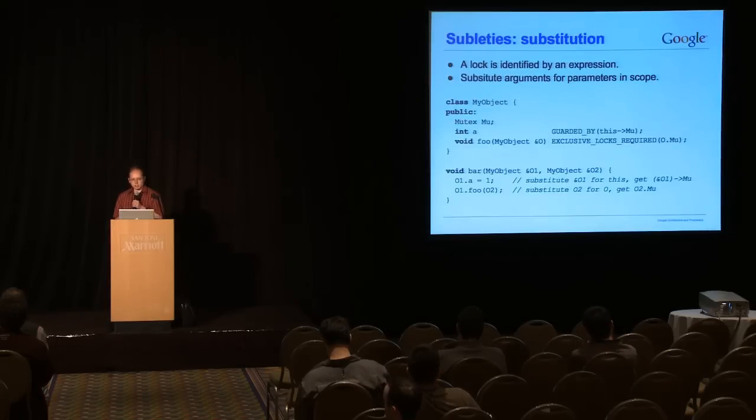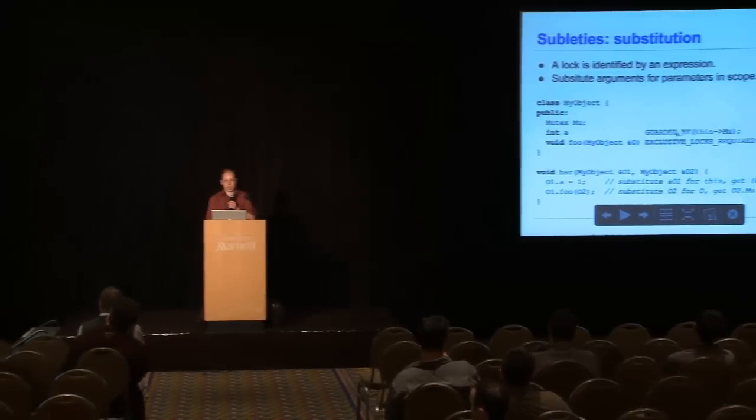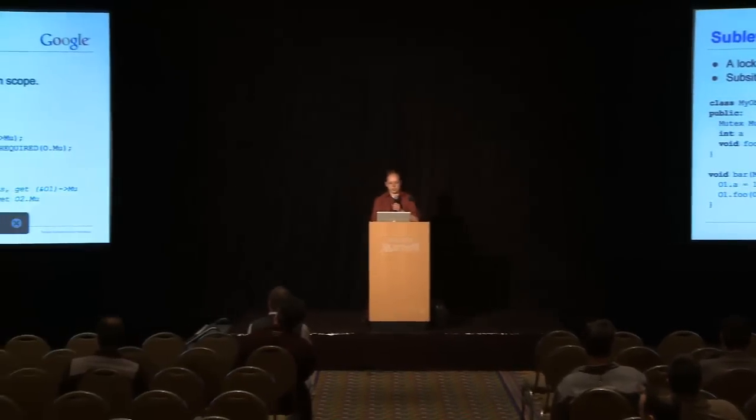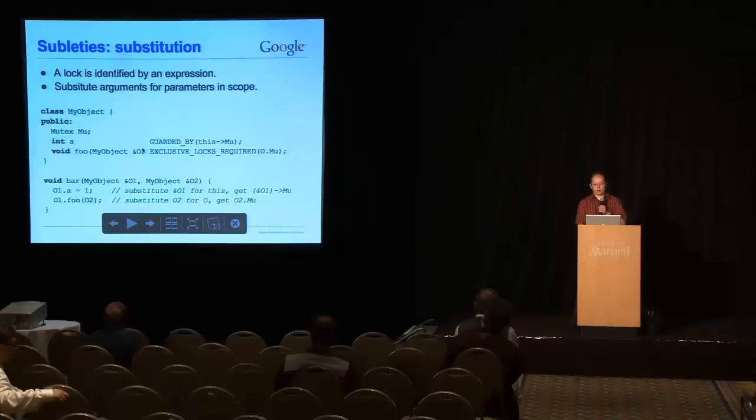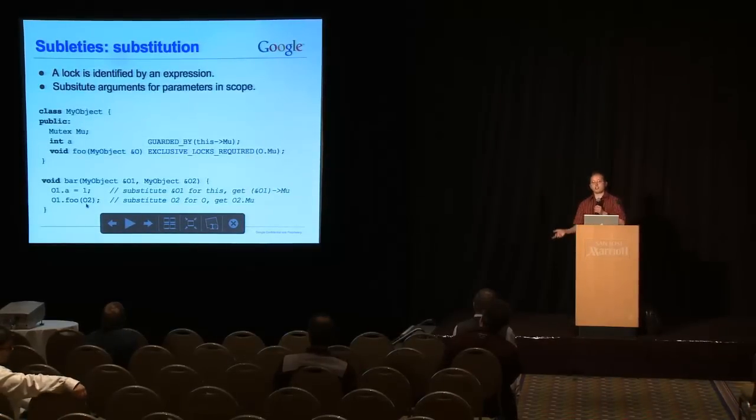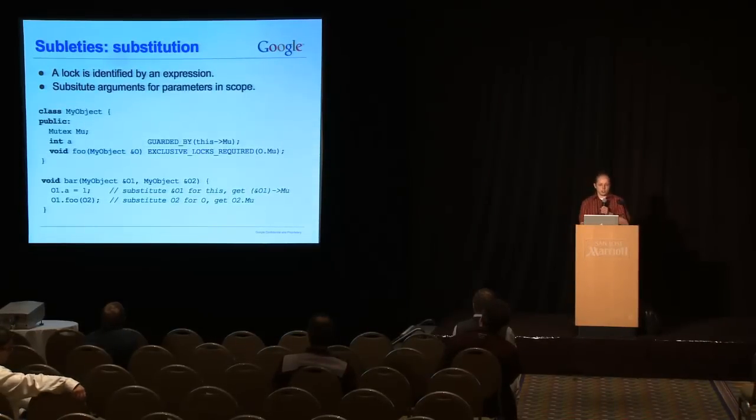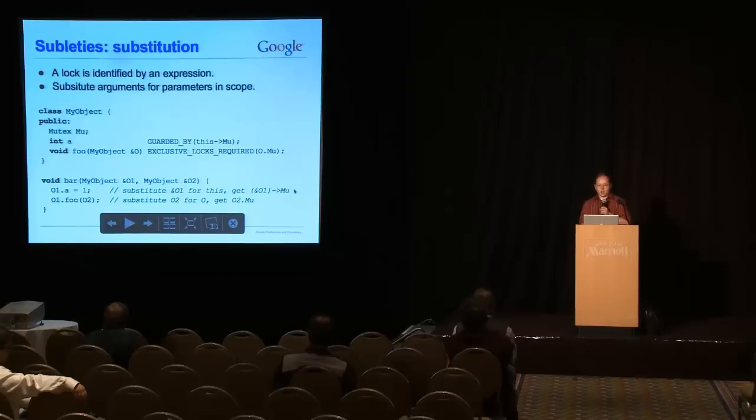You also have to extend the scope of function parameters to include the attribute of the function. So, we made a few changes to the parser to handle that. Okay, second subtlety. As I mentioned, we have to do some magic with naming, and that's just a simple substitution of variables for the most part. When you have something in a class that refers to this, then you need to substitute the appropriate object for this. And if you have a formal parameter, then you need to substitute the argument of the function call for the formal parameter. So, in this case, if we have 01.a, and a is guarded by this to mu, then we substitute the address of 01 for this to get a different expression, and similarly for the function call.